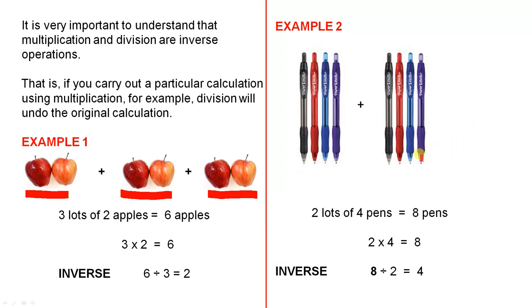Example 2. Two lots of four pens. There's one lot, there's another lot. When you count those up, that gives you eight pens. Mathematically, two times four equals eight. If you take the eight, which is the total, and you divide it by two, that is the number of groups, you end up with four, which is the number in each group. Again, division undoes multiplication.